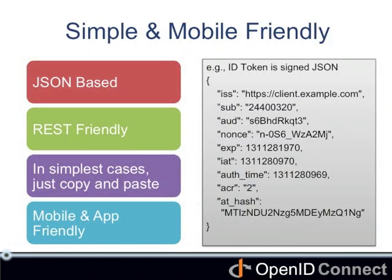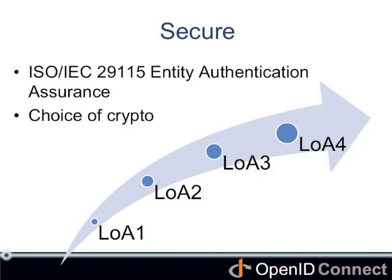It's also very simple. It is JSON based and REST friendly. In the simplest cases, it's just copy and paste to implement a simple relying party. And it is mobile and app friendly because that was an explicit design principle. Thanks to OAuth 2.0, its security model can scale all the way up to extremely secure, spanning from ISO 29115 level of assurance 1 to 4, leveraging cryptography and other techniques.